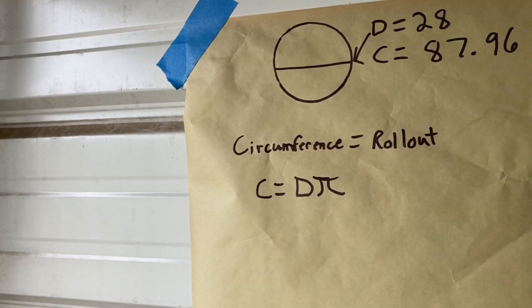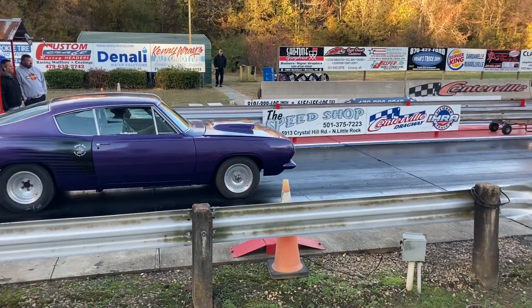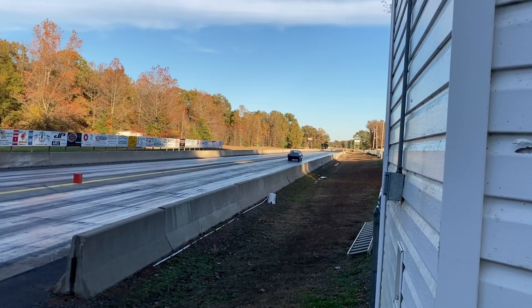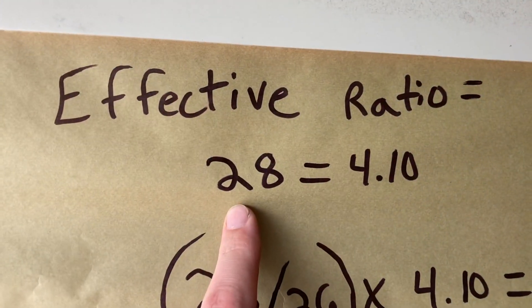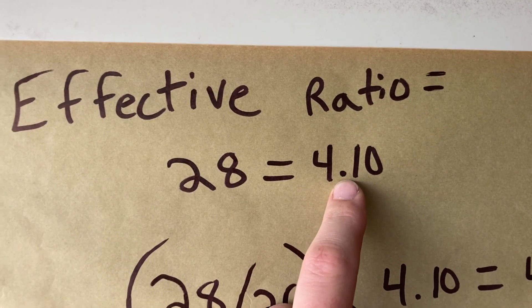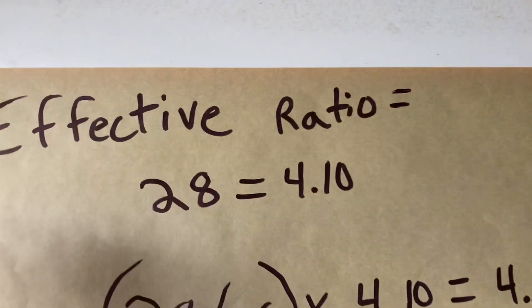Let me show you how this works with effective ratio. Right now, in my race car, the last time I raced, I had a 28-inch tall tire and a 4.10 gear. That was the actual gear ratio is 4.10. And that's in third gear, high gear, one-to-one automatic transmission.